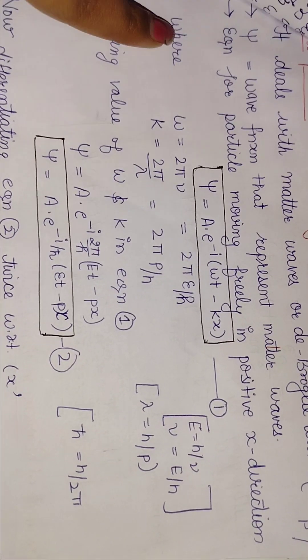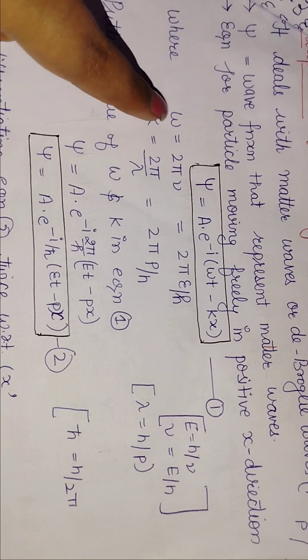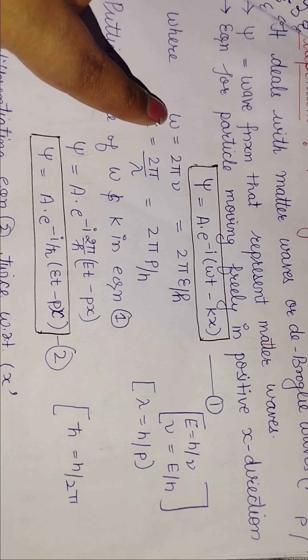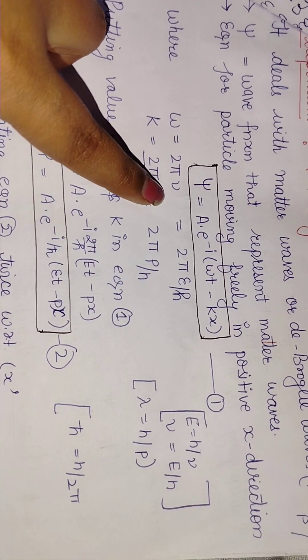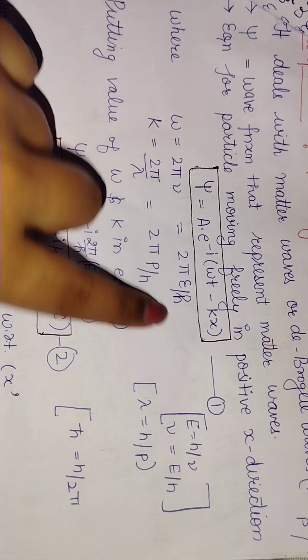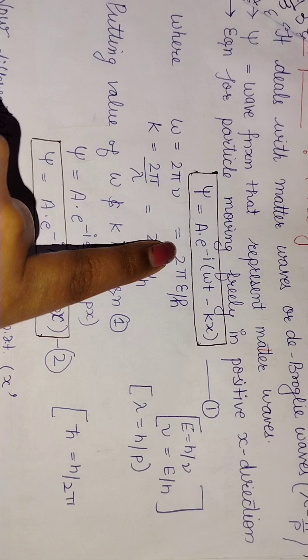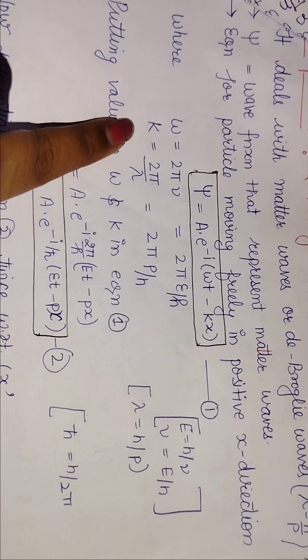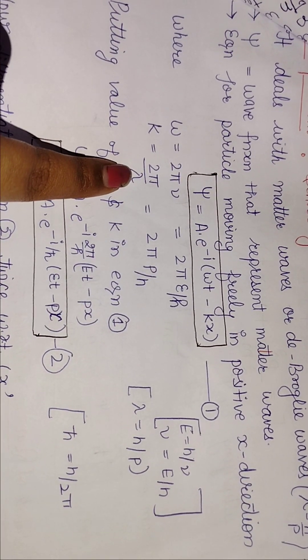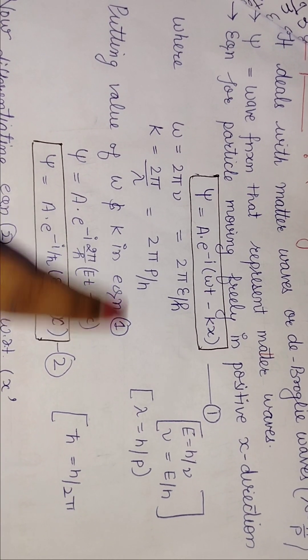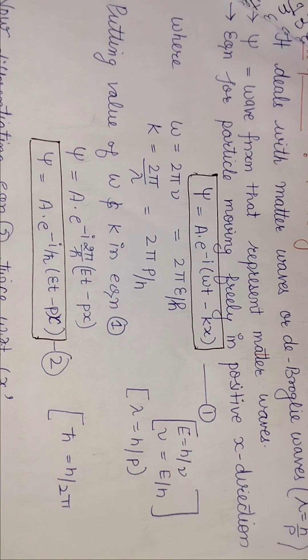Now, we know that omega (ω) we represent as 2πν. And ν, which is E/h, so ω is E/h. And k will be 2π/λ, which is 2πp/h, because λ = h/p.